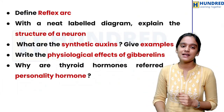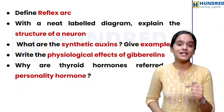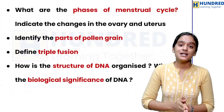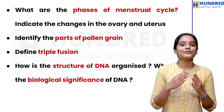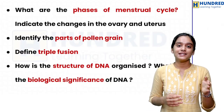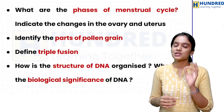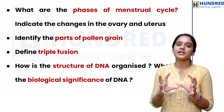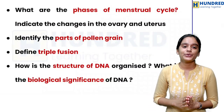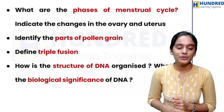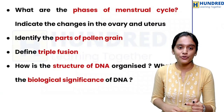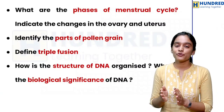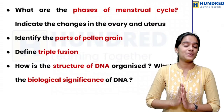What are synthetic toxins — give examples. The physiological effects of gibberellin. Why is the thyroid hormone referred to as the personality hormone? What are the phases of the menstrual cycle — indicate the changes in the ovary. This is a very important question. Identify the parts of a pollen grain. If you have the structure of DNA, label parts A, B, C, and D — this is very important. Define triple fusion. How was the structure of DNA organized? What is the biological significance of DNA? This is a very frequently repeated question.